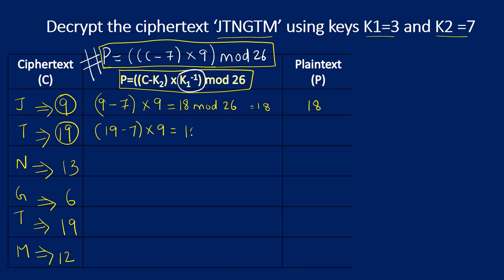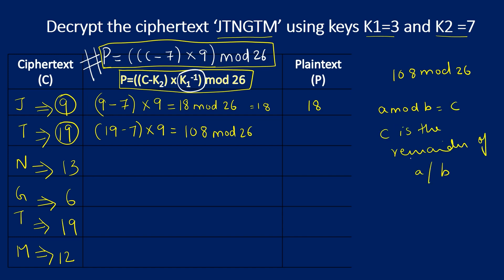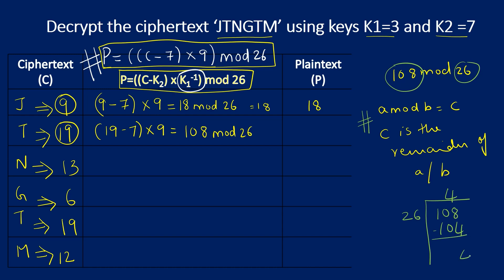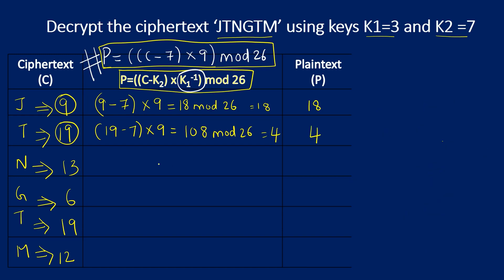For C = 19: (19 − 7) × 9 mod 26 = 12 × 9 mod 26 = 108 mod 26. Since 108 is greater than 26, we divide: 26 × 4 = 104, remainder = 4. So 108 mod 26 = 4, and the recovered plaintext number is 4.